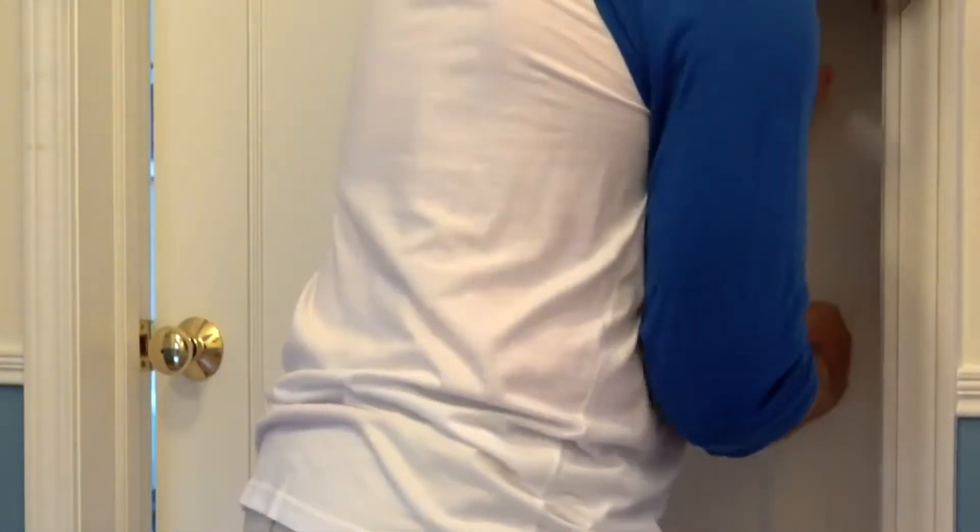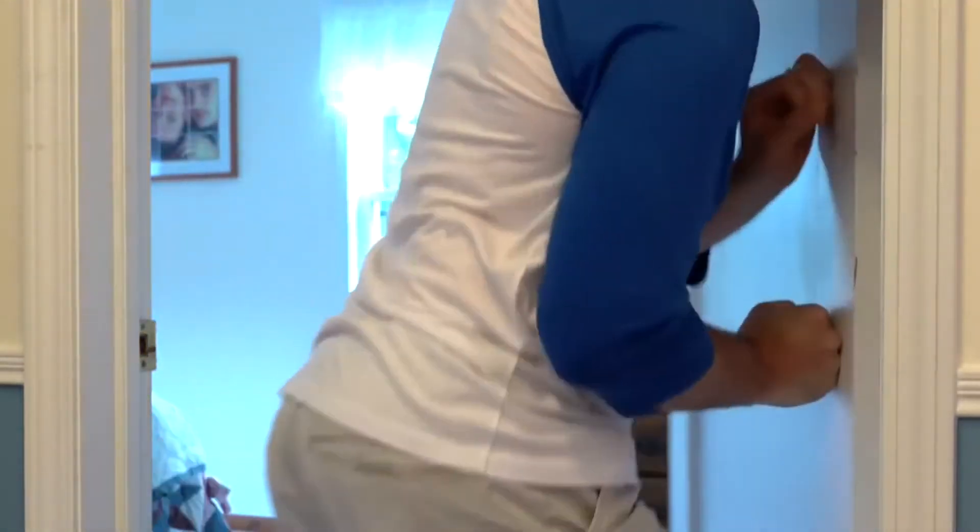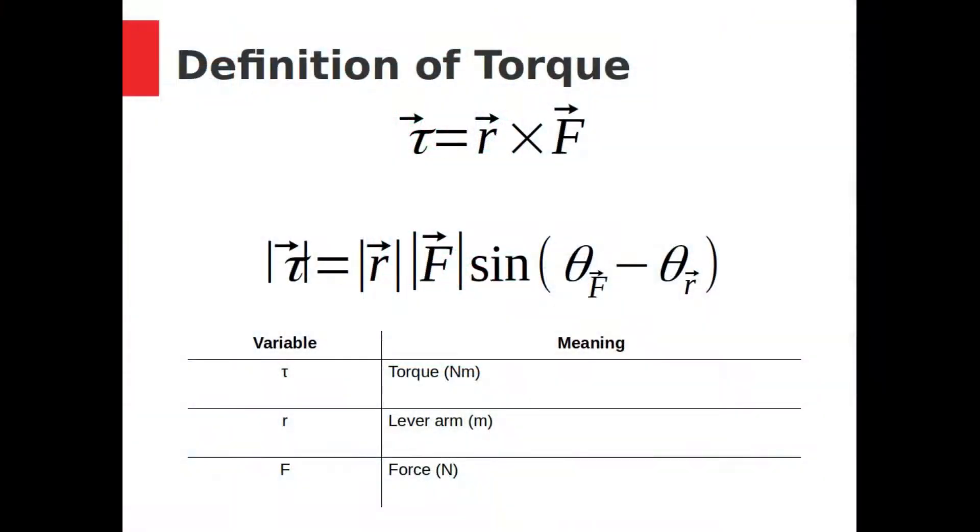Torque has to account for both the size and location of the force. The equation for torque is as follows. R is the distance from the center of rotation to the point where the force is applied. That's called the lever arm.